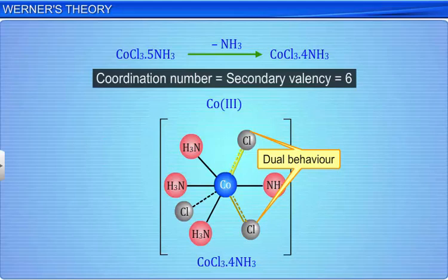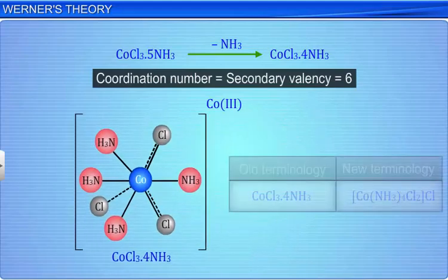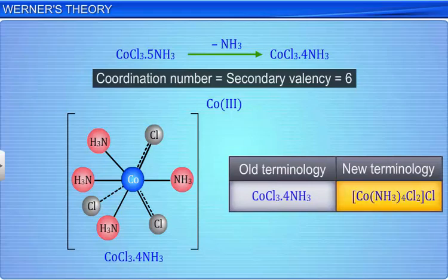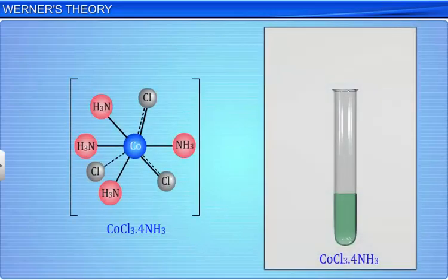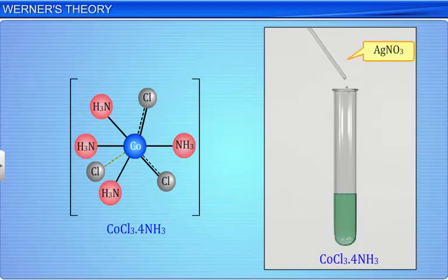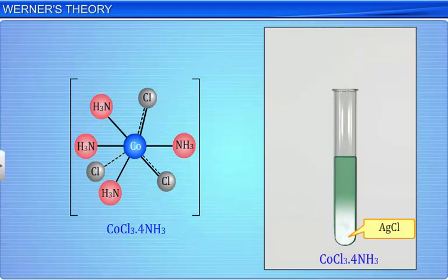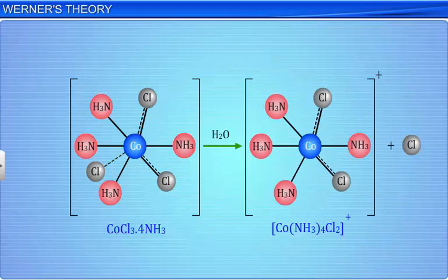Thus, only 1 chloride ion can be precipitated as silver chloride. This complex on ionization gives 2 ions: one [Co(NH3)4Cl2]+ and the other a chloride ion. The structure of the complex is shown here.